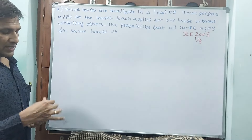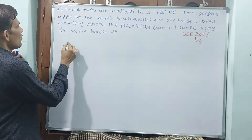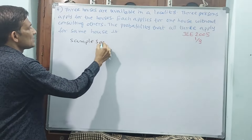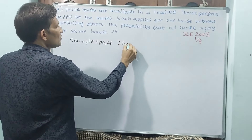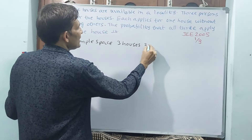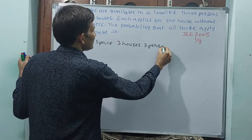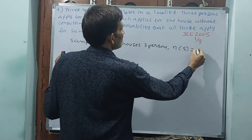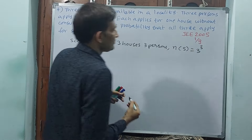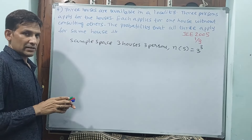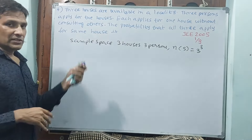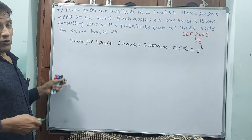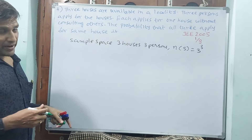First of all, the basic thing is the sample space. How do you write about sample space? Three houses, three persons. Sample space n(x) is equal to three cube, that is 27. This is the denominator for finding the probability.